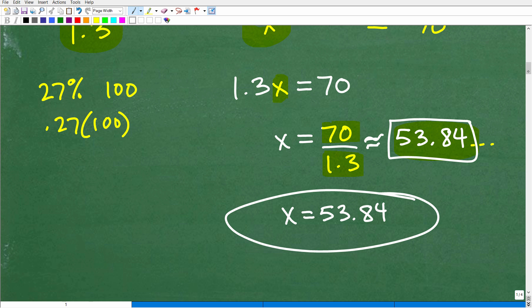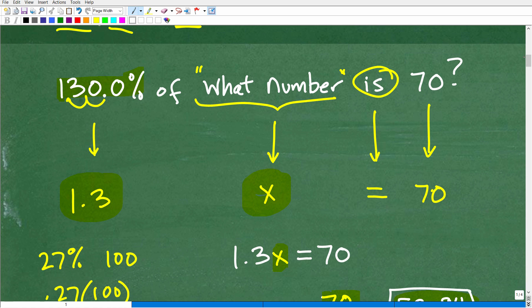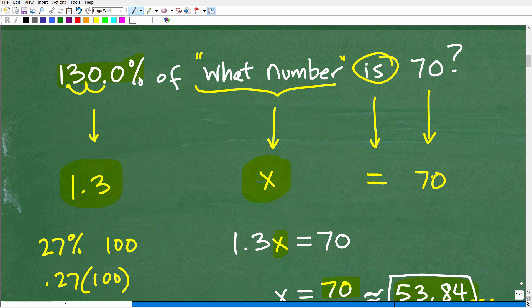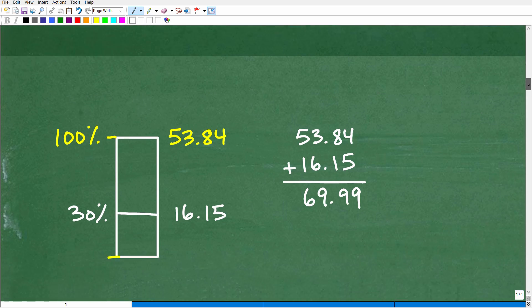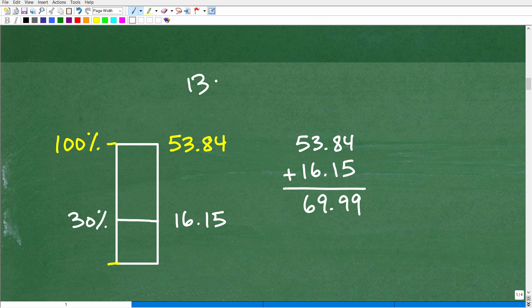So let's go up here. 130% of 53, okay, what was that number again? 53.84 is 70. Now, let's go ahead and check this, all right? We're going to do this two ways. 53.84, that's the answer. So 130%, right? So we're saying 130% of this number, and this number that we just calculated was 53.84. So to calculate or to get 130%, we're going to go from zero all the way up to 100% of that number. Of course, that number will be 53.84. So that's 100% right there.